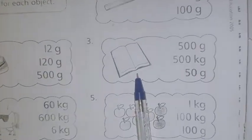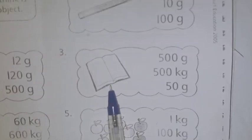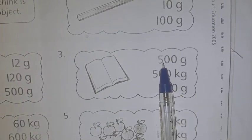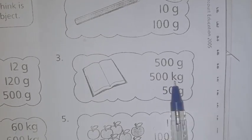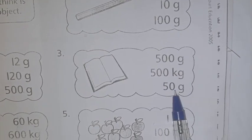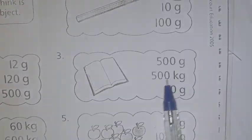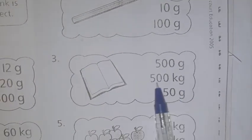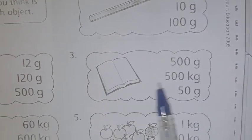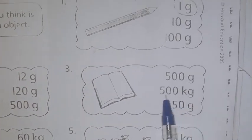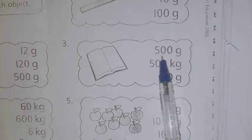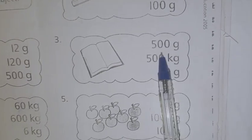Then see another one, picture of a book. 500 gram, 500 kilogram, 50 gram. Children, one is 500 gram, then 500 kilogram. This will not happen. This is a book. 500 kilogram is a very big weight. Then 50 gram also, that is a very light weight. So we can guess that this book may weigh 500 gram and you can circle this.